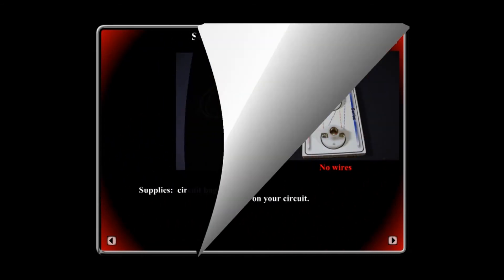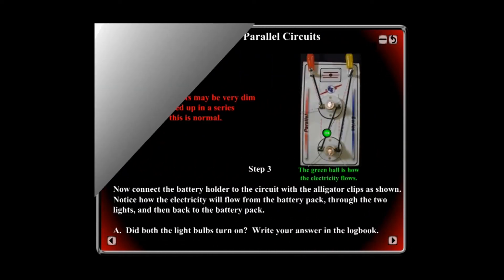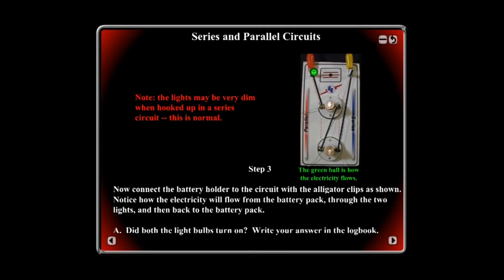Next, the lesson walks the student through how to set up their experiment with step-by-step instructions. In this experiment, they will take their circuit and set it up as a series circuit, take out a bulb, and write down what happens.